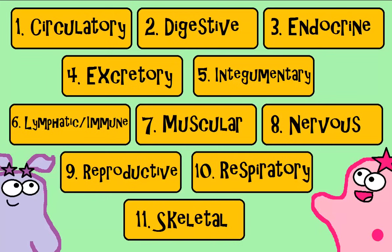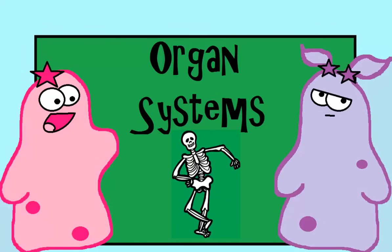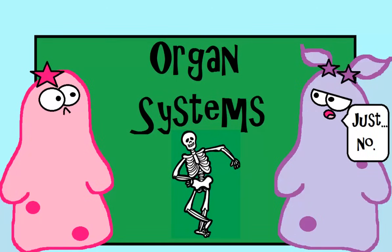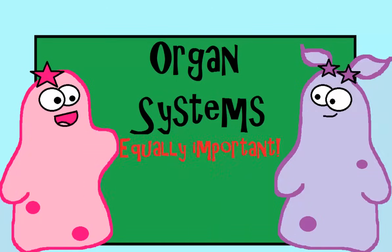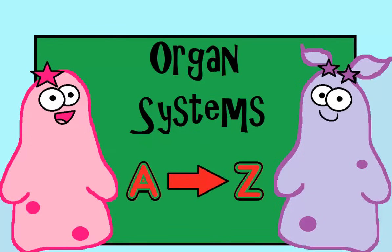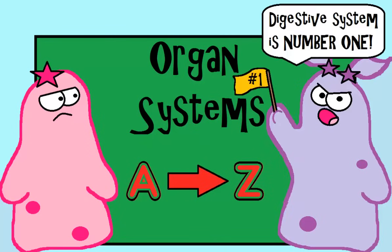So we're going to intro the 11 major organ systems. And keep in mind, this is just a quick intro. So we're doing the bare bones, no pun intended, of the systems. That means there are more functions than what we can go into here. Because all of the organ systems are so important, it's hard to know where to start. So we're going to go in alphabetical order because we don't want you to think that one is way more important than another.